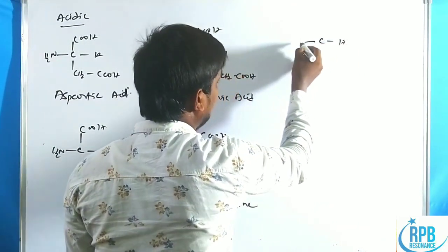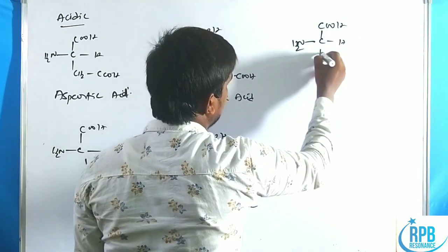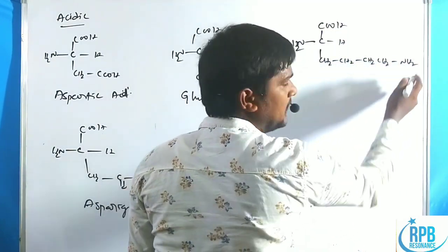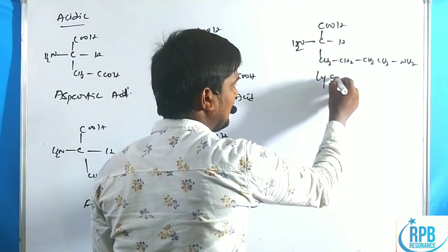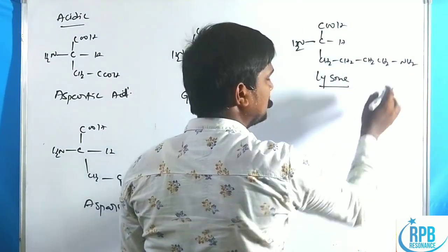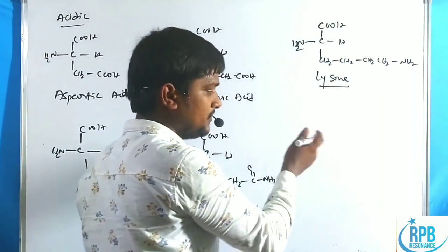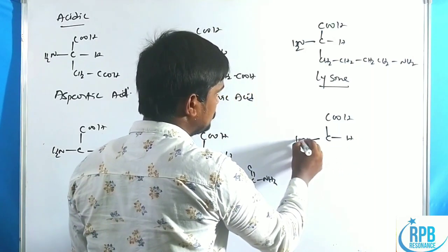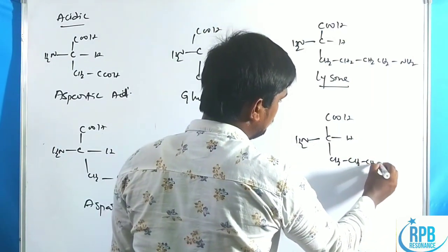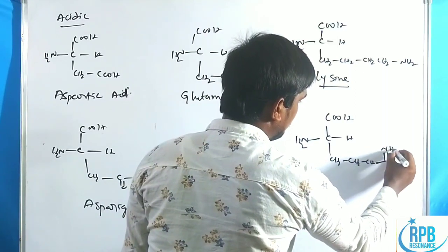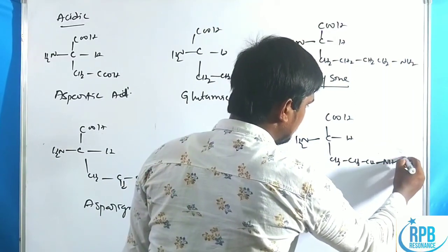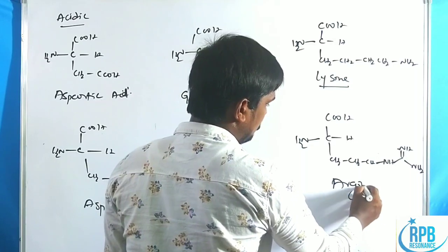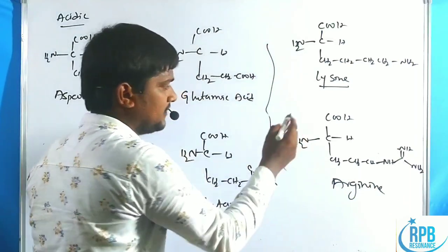Now the basic amino acids. Lysine has the structure NH2, COOH, with a CH2-CH2-CH2-CH2-NH2 butylamine side chain — two amine groups make it basic (LYS, K). Arginine has a similar chain ending in NH-C(=NH)-NH2, the guanidinium group (ARG, R). These two, along with histidine, are the basic amino acids.